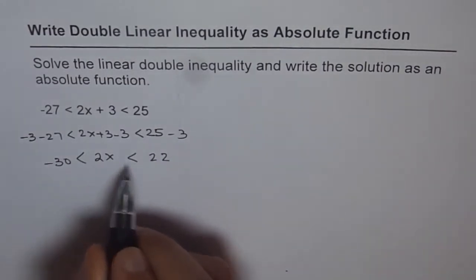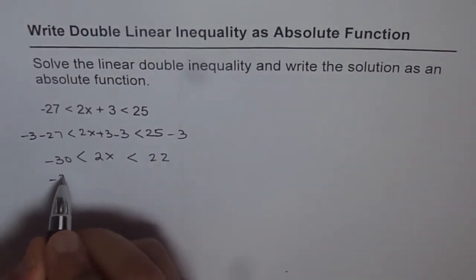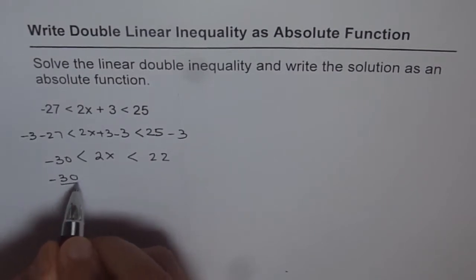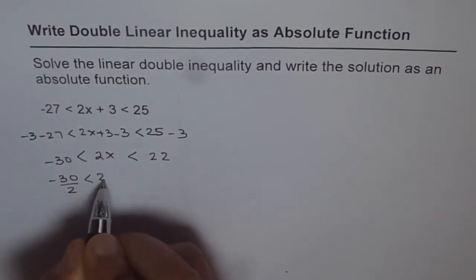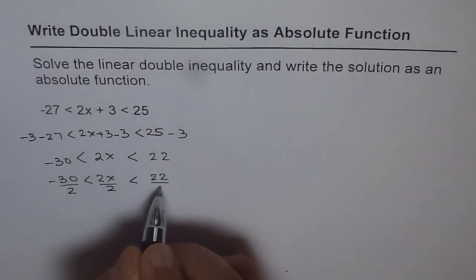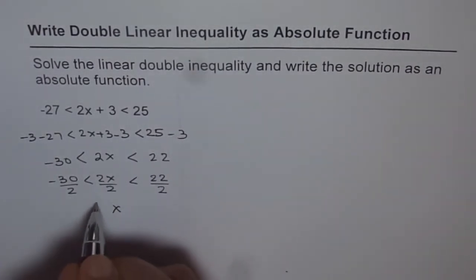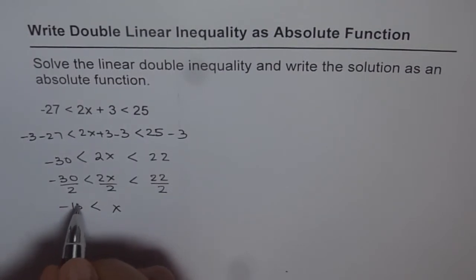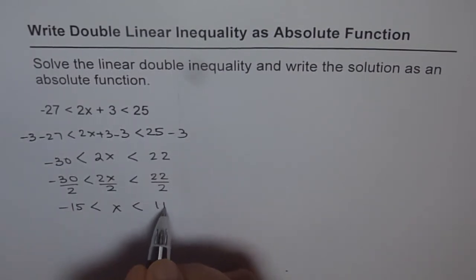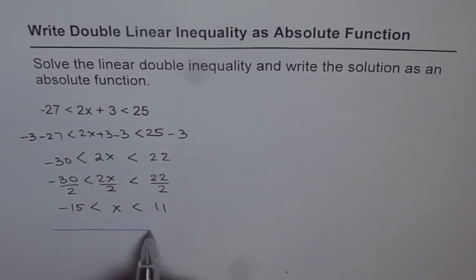Now we divide by 2: minus 30 divided by 2 is less than 2x divided by 2, which is less than 22 divided by 2. So we get x is greater than minus 15 and less than 11. That is our solution.